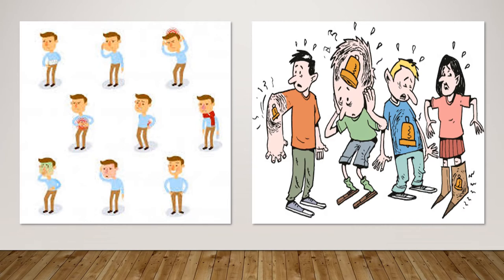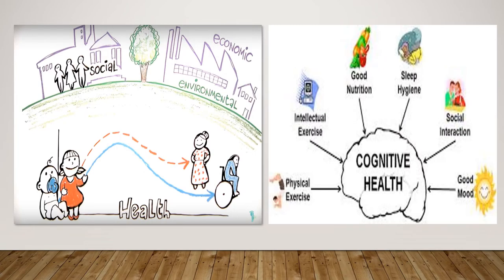The theory defines symptoms subjectively as perceived by the patient. Symptoms are proposed to vary in intensity, timing, quality, and distress. Multiple symptoms occurring together may have the same or different causes and can have a cumulative effect. By categorizing influencing factors as physiological, psychological, and situational, TOUS promotes thinking beyond the physical scope of care.